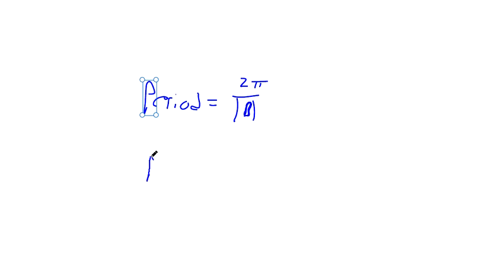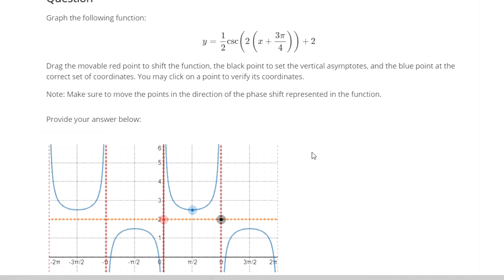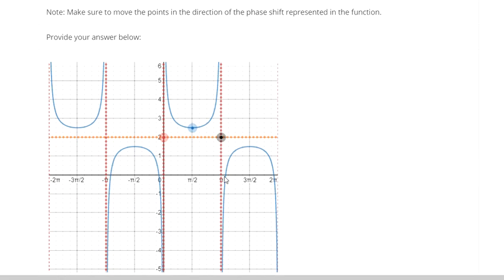In this case, we know that b is 2, so if we divide those, that gives us pi, so this thing should repeat itself once we've gone pi units on the x-axis.